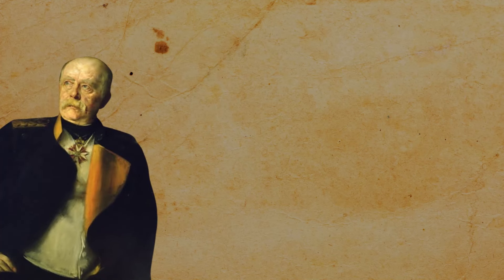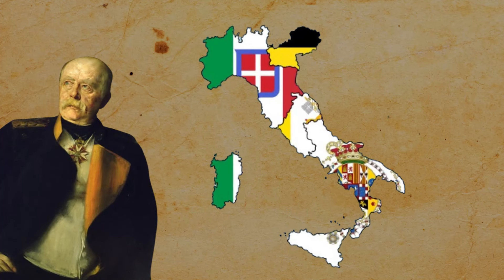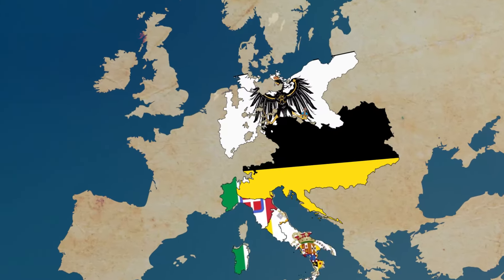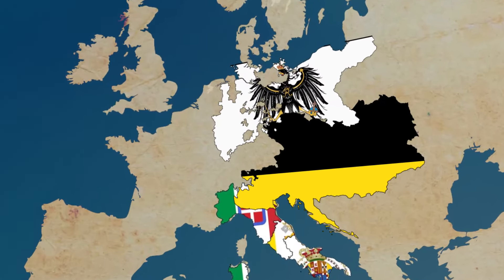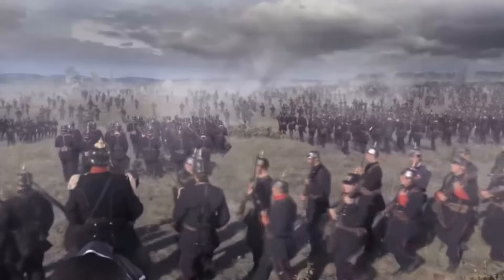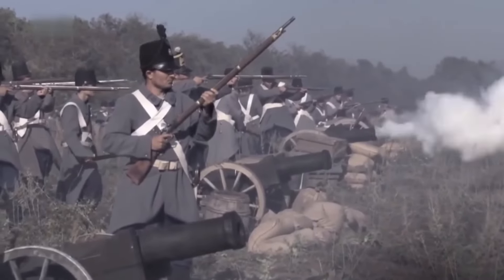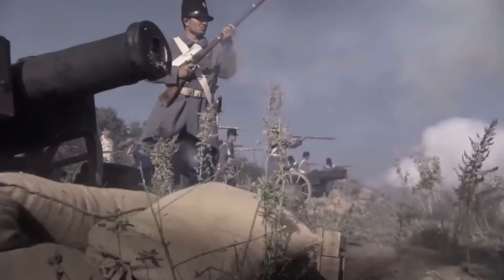Bismarck took advantage of the opportunity and formed an alliance with Italy, offering Austrian territories in exchange for military aid. Shortly afterwards, Prussia invaded Austria together with Italy. And because of the powerful Prussian army and the decadence of Austria, Prussia won the war.